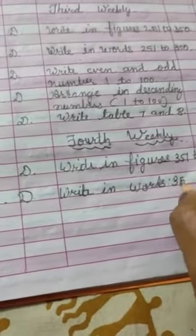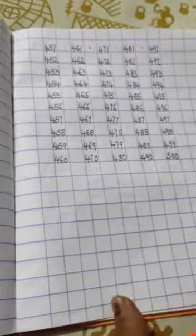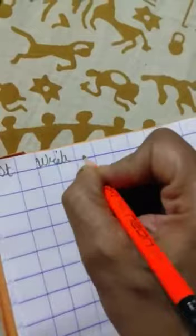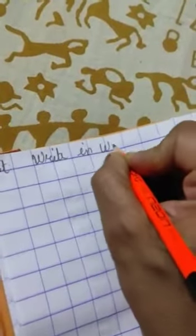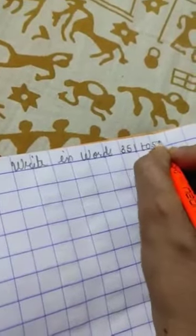Number 351 to 500. Open your notebook's new page. You have to write on the left side, on the left side corner, today's date, then the title — write in words: 351 to 500.